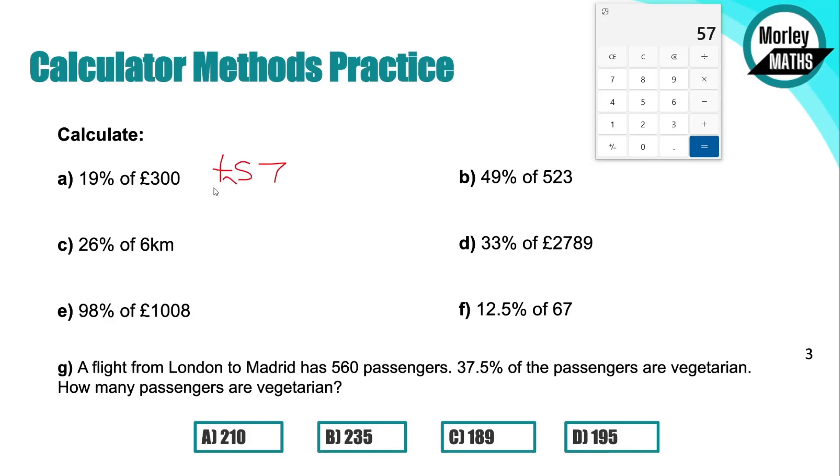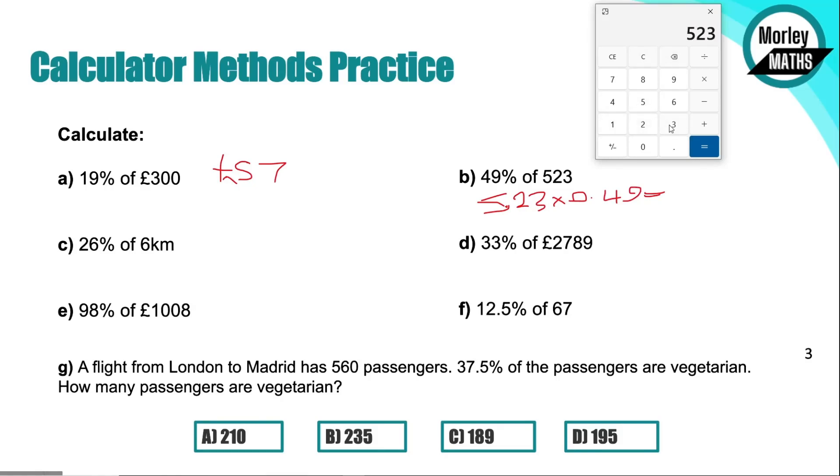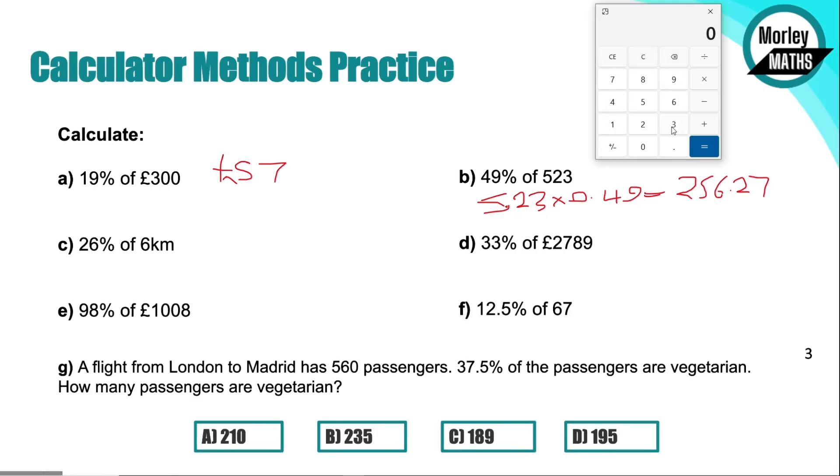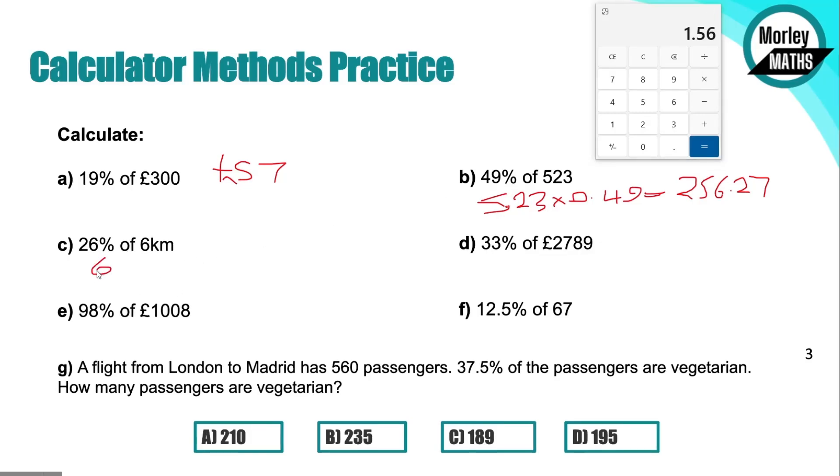With this next one, I'll use the decimal option again. So 523 times 0.49, we'll pop that in the calculator at the top here. 523 times 0.49 gives us 256.27. If we look at C, we've got 26% of 6 kilometres. So 6 times 0.26 equals 1.56.